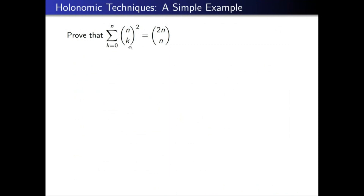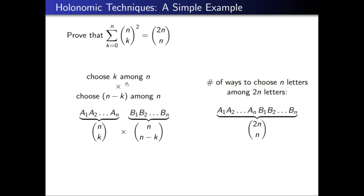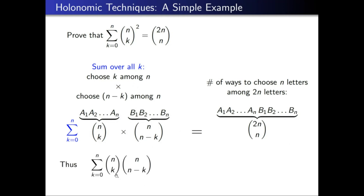Let me explain through an example. Suppose you're trying to prove this identity: the sum of binomial coefficients squared equals 2n choose n. One way is to count the ways to choose n letters among 2n letters. I have a1 up to an and b1 up to bn, and 2n choose n ways to pick n letters. Alternatively, pick k letters among the a's and n−k among the b's. Summing over k, since n choose (n−k) equals n choose k by symmetry, we get the sum of n choose k squared, which equals 2n choose n — a cute proof.